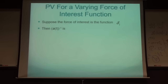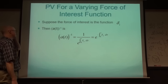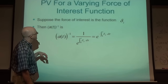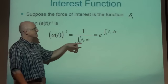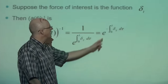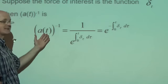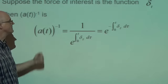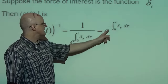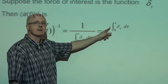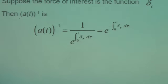For a varying force of interest delta_t, the present value discount function is a(t)^(-1) - the same formula as before but with a negative sign in the exponent because it's the multiplicative reciprocal of the accumulation function.